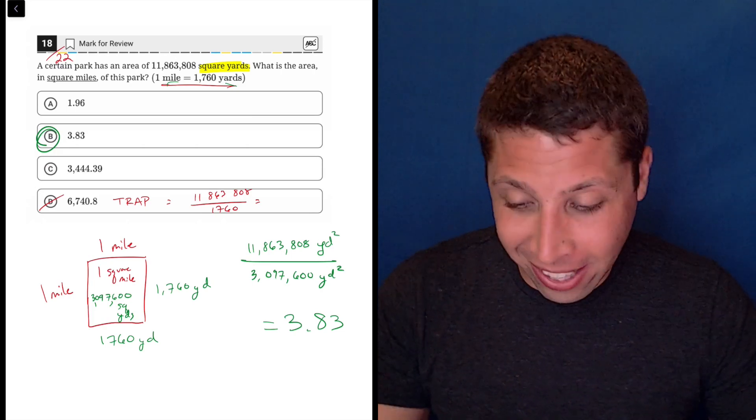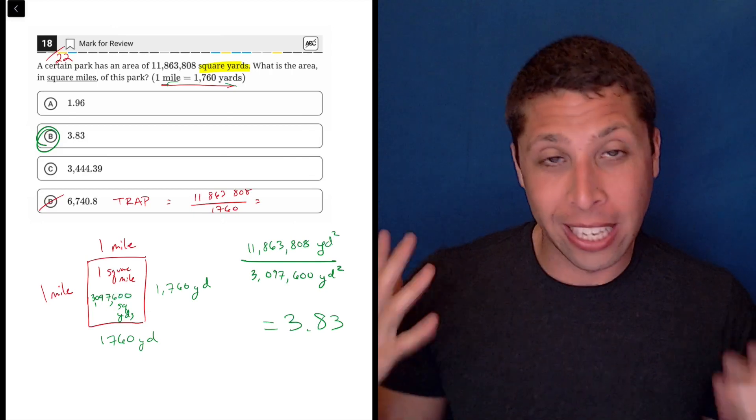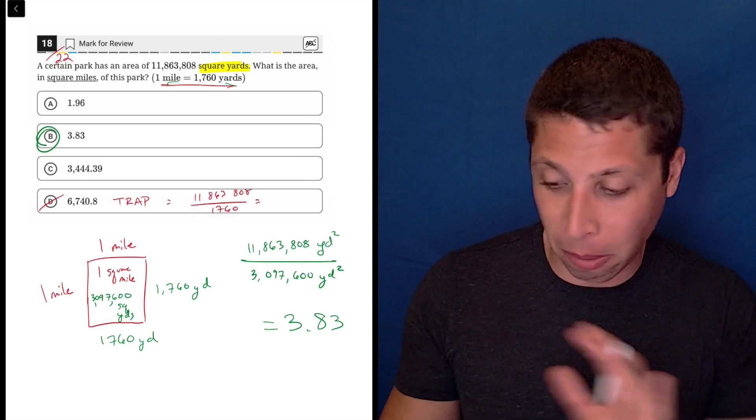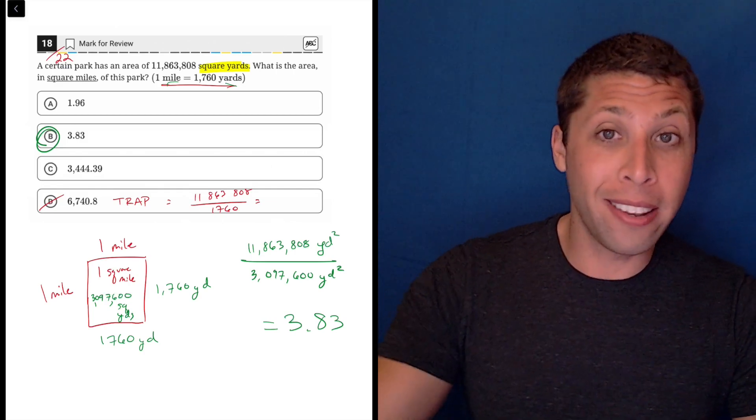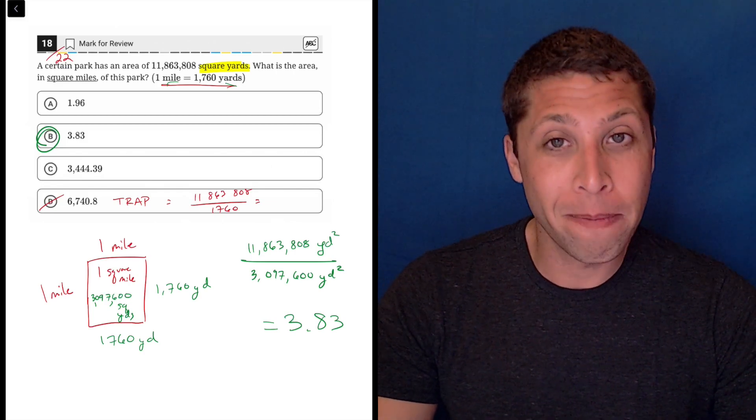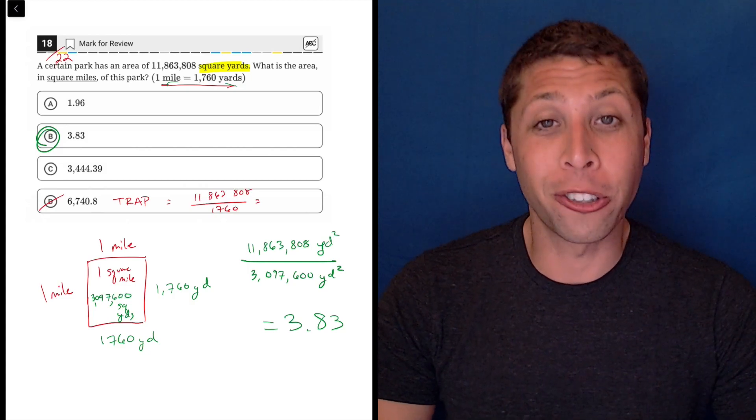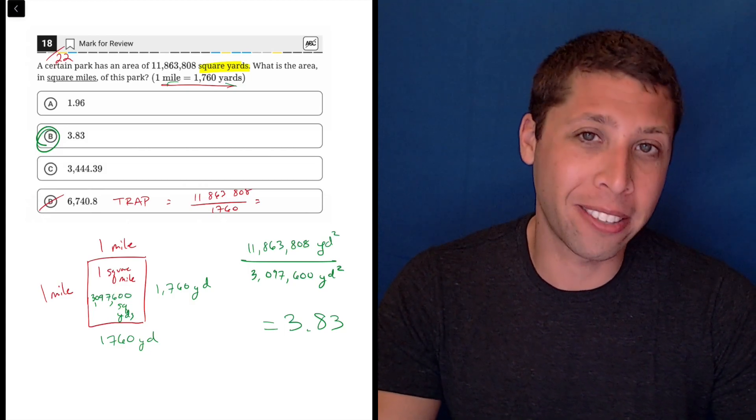So even if you do it right, these numbers are so big that you start to get nervous. But you got the calculator, so hopefully just double check you're entering everything correctly. Maybe if you made this mistake and you picked something like choice D, you will have just learned your lesson the hard way, but that's okay because it's a practice test, right?